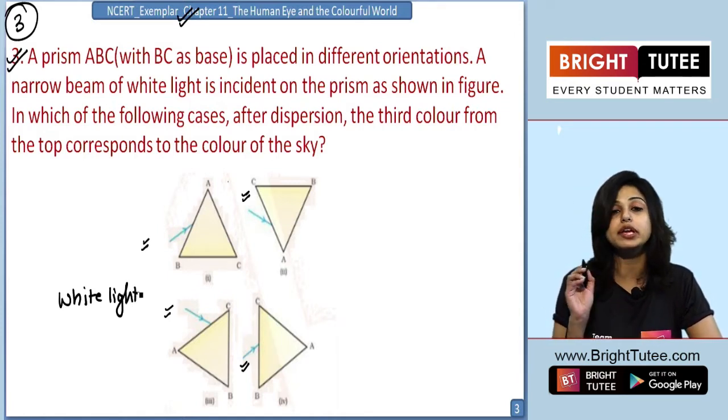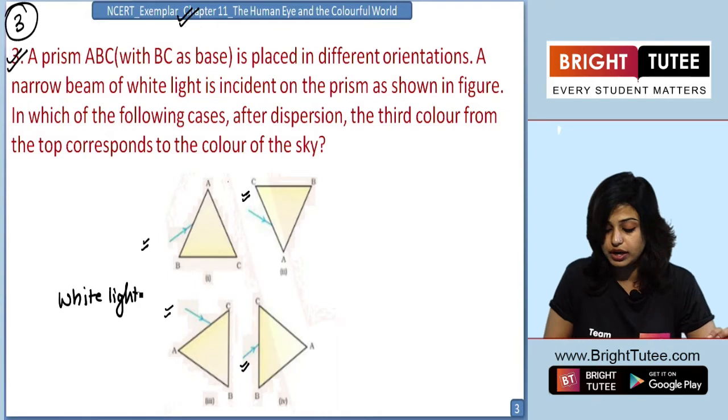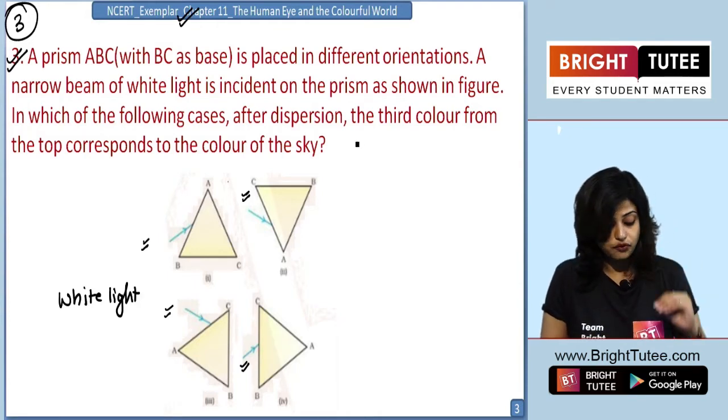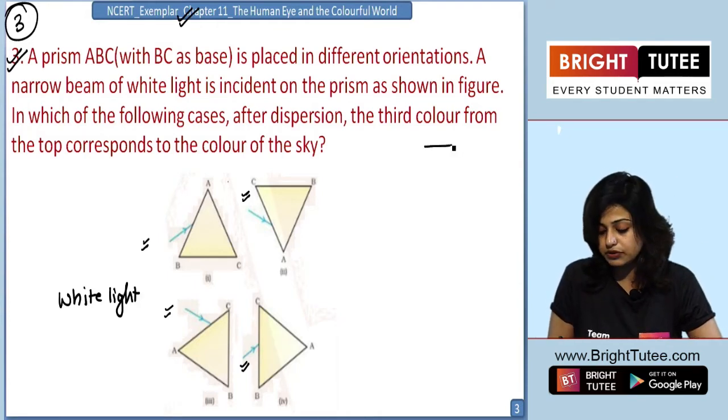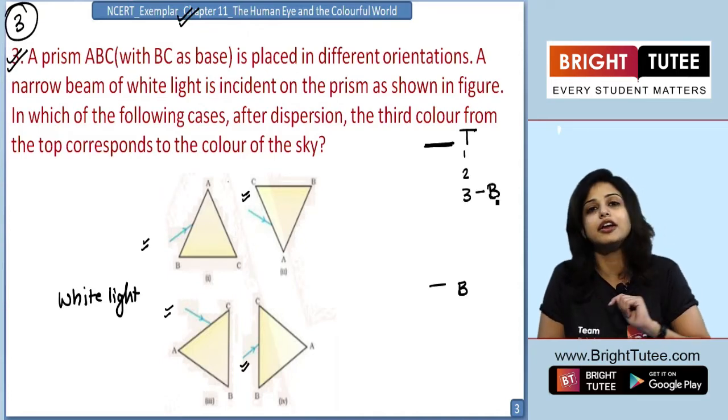Then in which of the following cases? Now the examiner wants to know in which of the cases after dispersion, the third color from the top. That means if we say the color disperses, this is the top and this is the bottom. So 1, 2, 3. The third color should be which one students? The color of the sky.